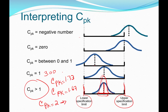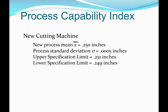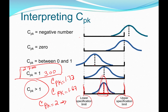A process producing within three sigma, or C sub p k equal to one, means fewer than 2,700 defects per million. A C sub p k of 2.0 means 3.4 defects per million opportunities — DPMOs. So 3.4 defects per million versus 2,700 is the difference between a C sub p k of 1 and a C sub p k of 2.0.